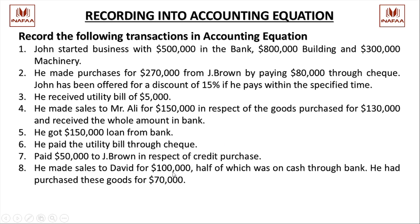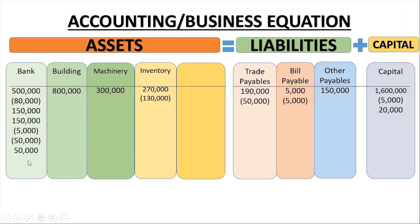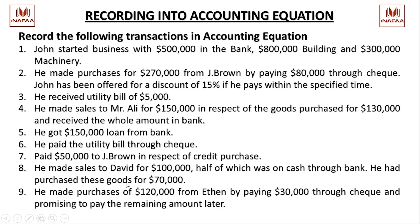Next transaction: sales to David for $100,000 — half cash through bank ($50,000) and half as a receivable ($50,000). The goods sold were purchased for $70,000, so inventory decreases by $70,000. Net asset increase is $30,000, and $30,000 profit is added to capital — the equation balances.